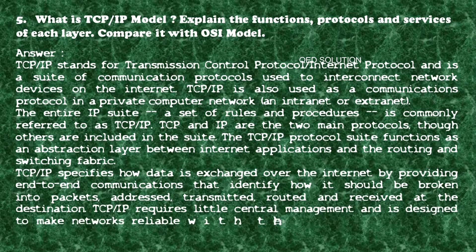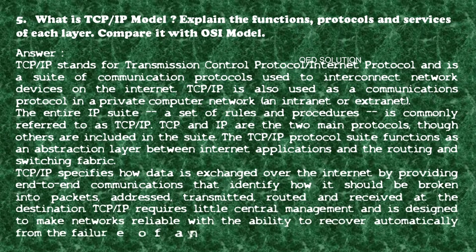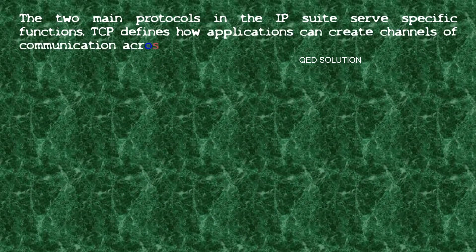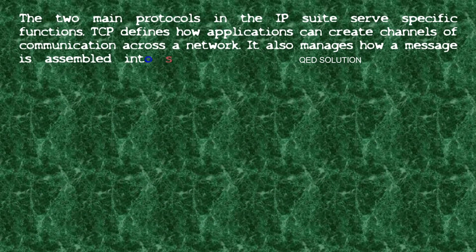The entire IP suite — a set of rules and procedures — is commonly referred to as TCP/IP. TCP and IP are the two main protocols, though others are included in the suite. The TCP/IP protocol suite functions as an abstraction layer between internet applications and the routing and switching fabric. TCP/IP specifies how data is exchanged over the internet by providing end-to-end communications.